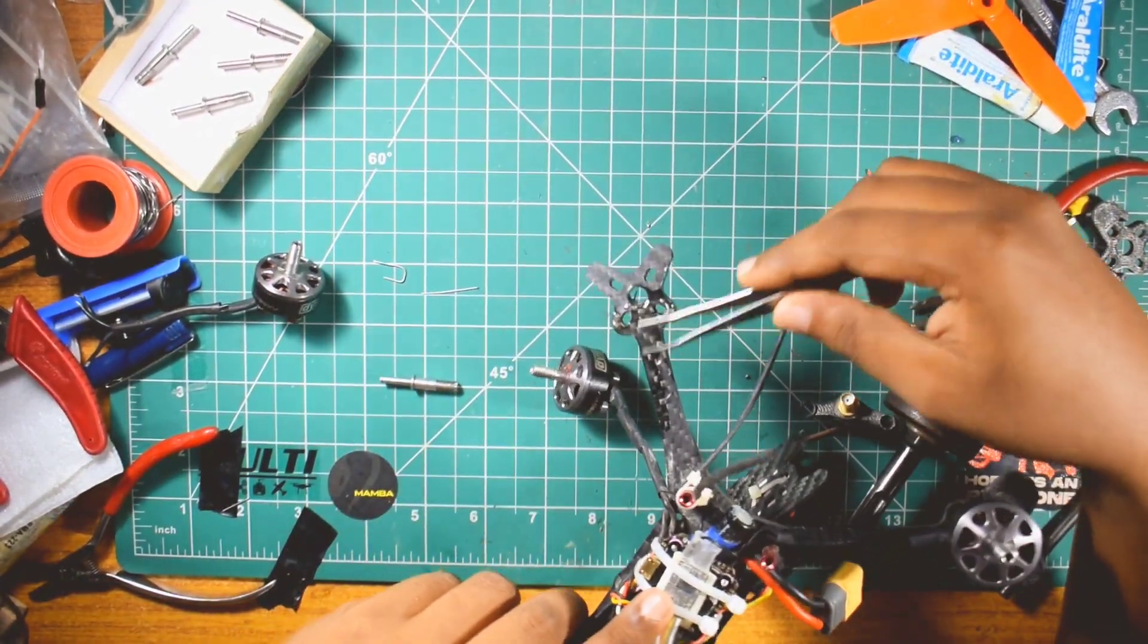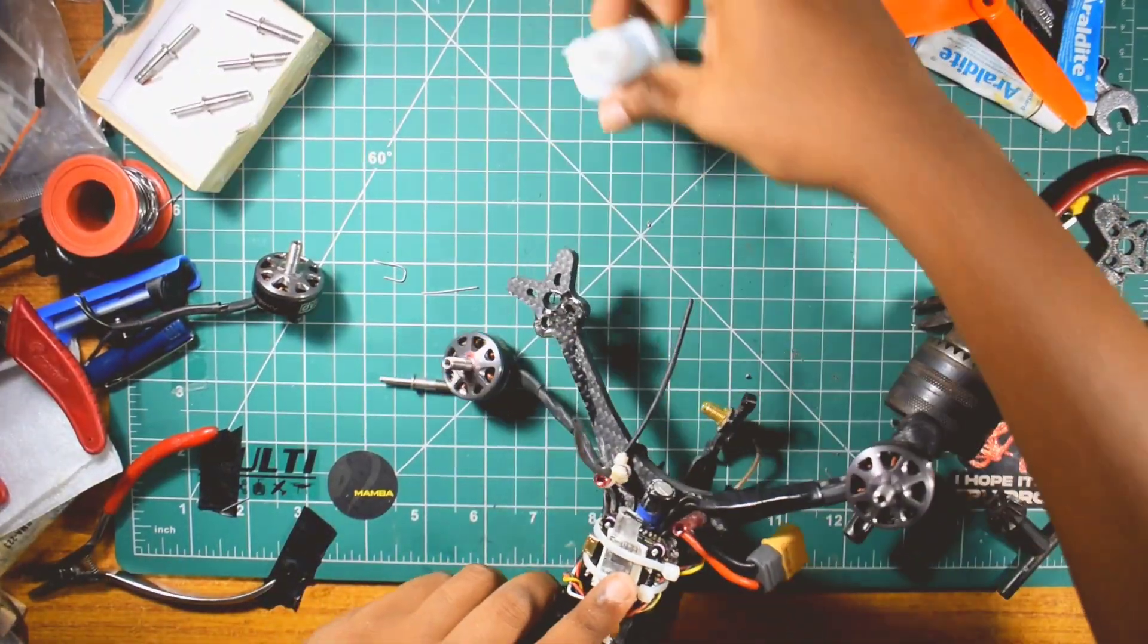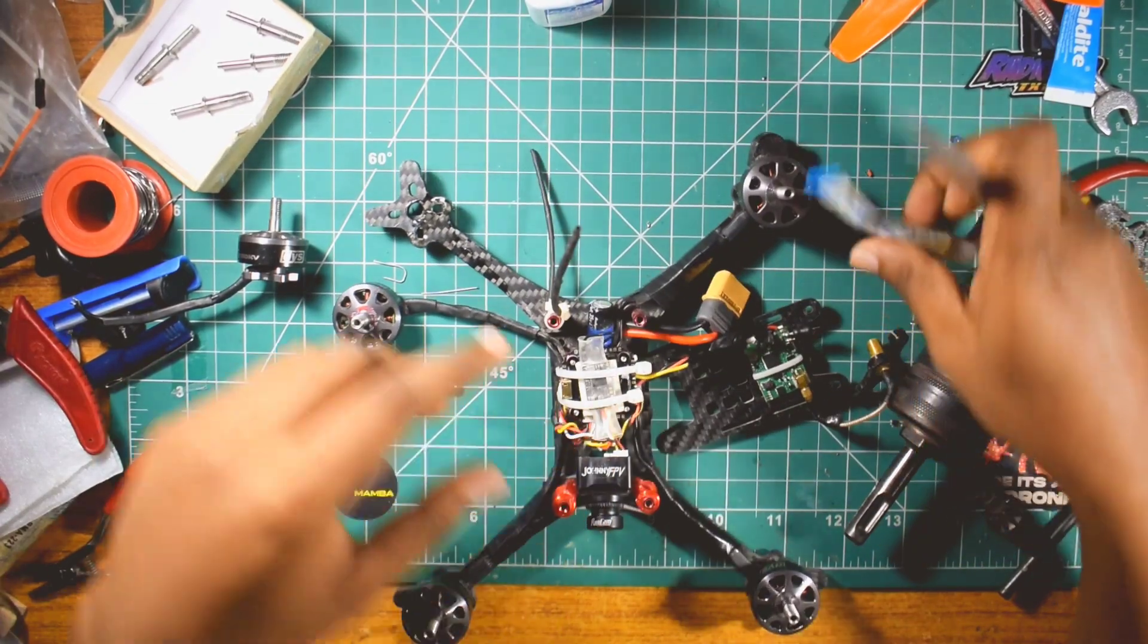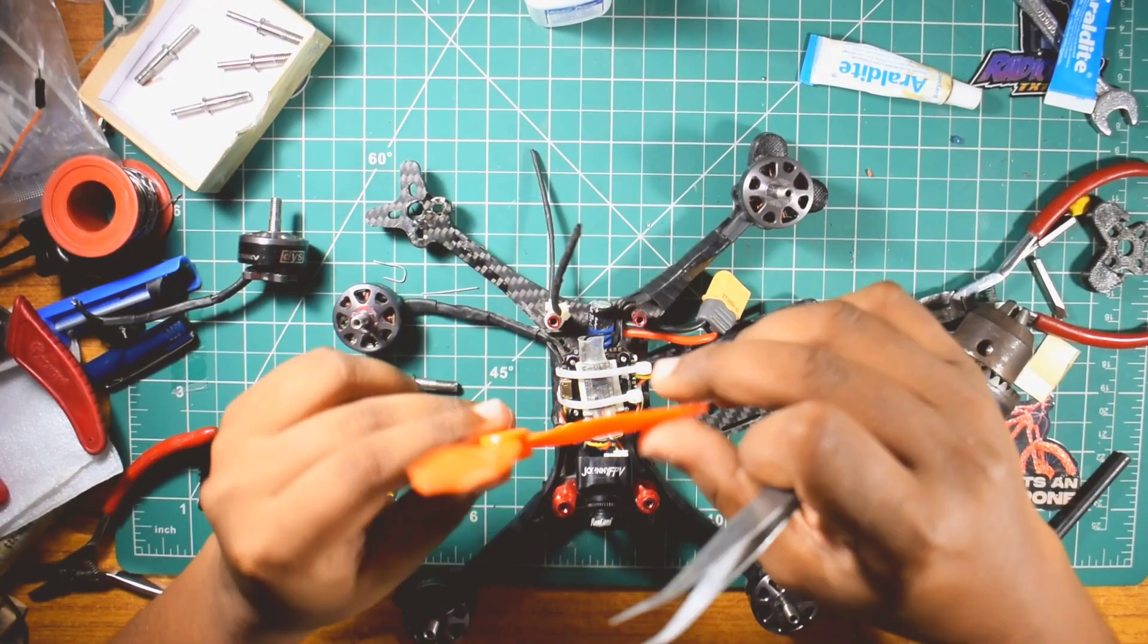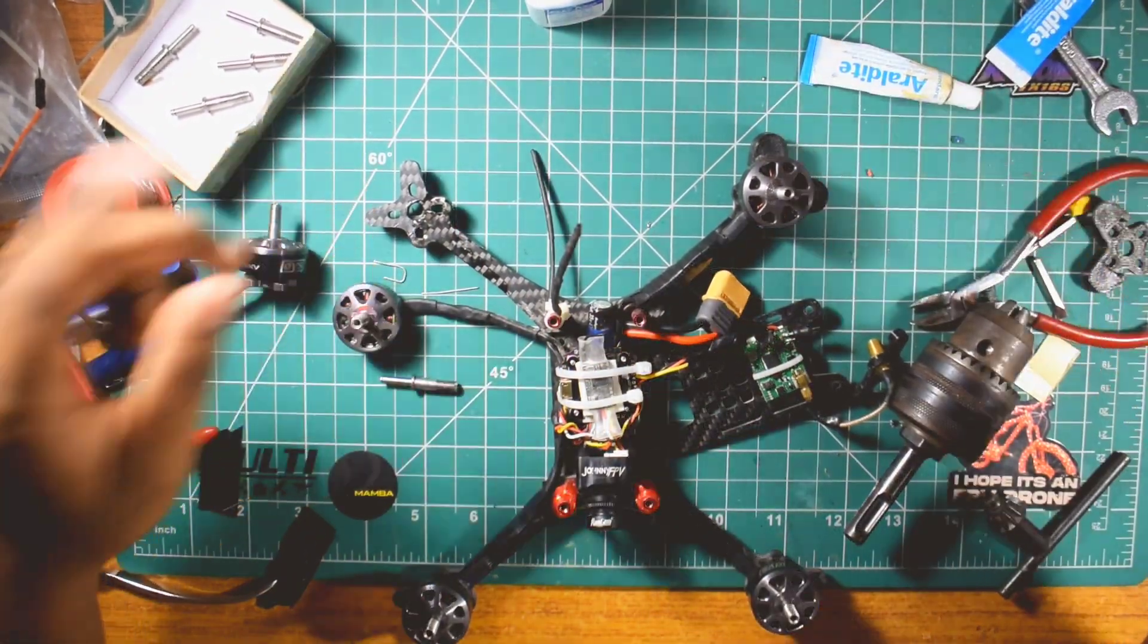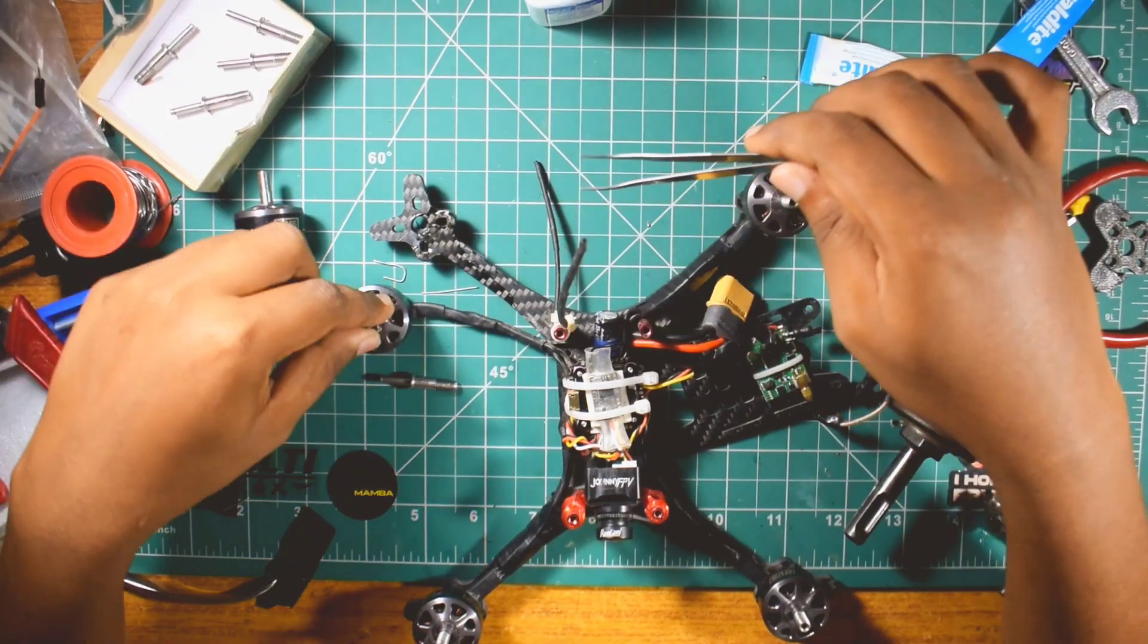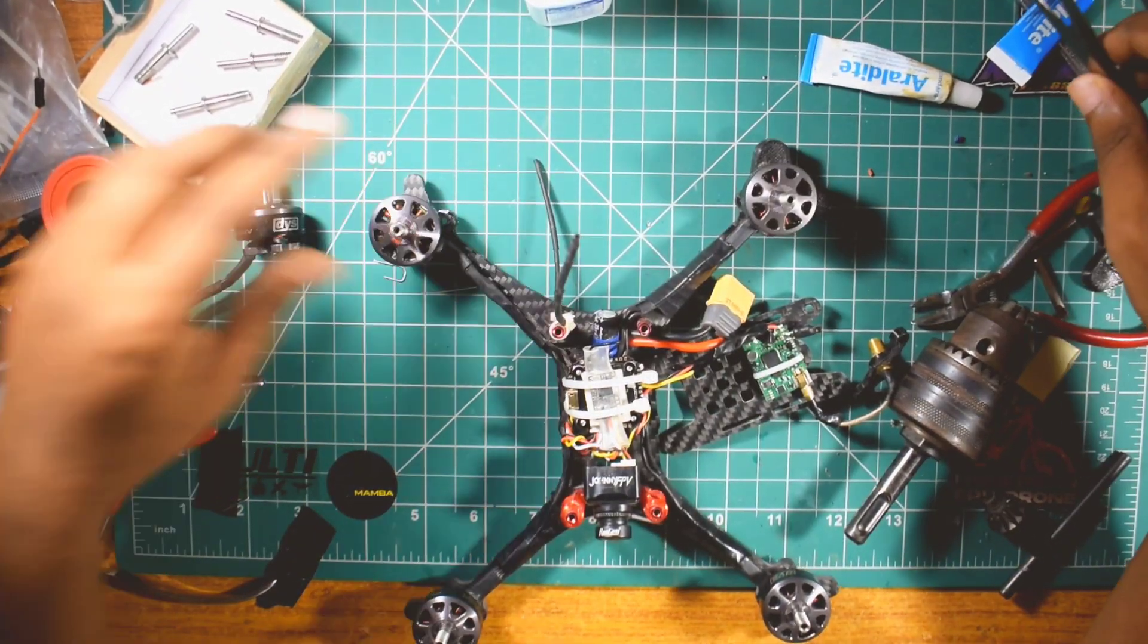I corrected using some epoxy glue and some red light. So what happens is most probably during a crash, the first thing would be the props bending or breaking. And if the crash is more severe, you will end up with bent shafts or broken arms.